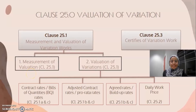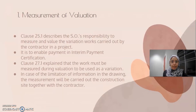Next, continuing with Clause 25 - Valuation of Variation. I am Siti Asma. Here is the summary for Clause 25, covering measurement of valuation, type of valuation, and certifying of variation work. In Clause 25.1, the SO has the responsibility to measure and value the variation work carried out by the contractor in a project, to enable payment in interim payment certification.